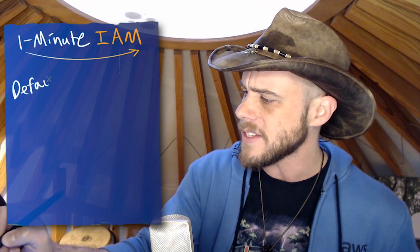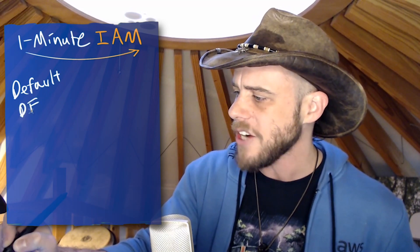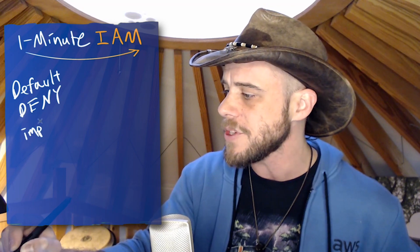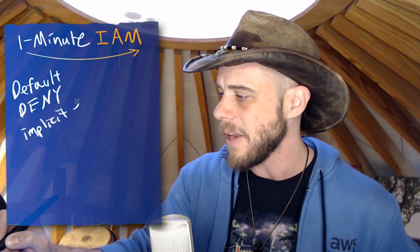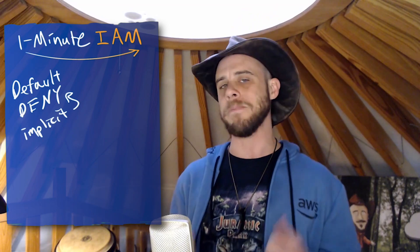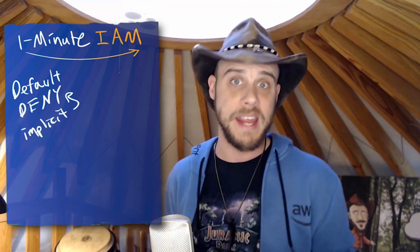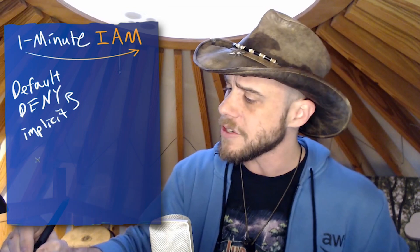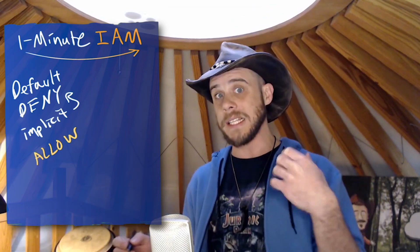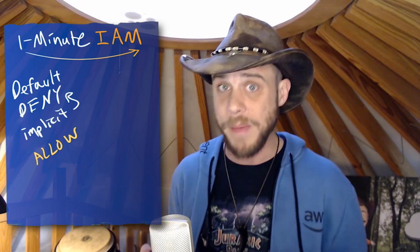Often one of the biggest concerns is accidentally granting additional privileges later on in an unintended fashion. Keep in mind that, as we said previously, there is a default deny-all for actions. We call that specifically the implicit deny, meaning — implicit being a fancy word for implied — without any further action, we're going to deny everything.